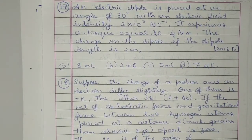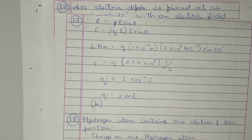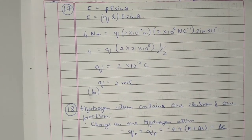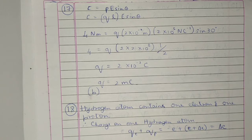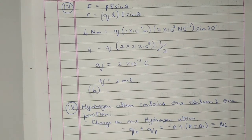Question 17: An electric dipole is placed at an angle of 30 degrees with electric field intensity 2 × 10⁵ N/C. It experiences a torque equal to 4 Nm. The charge on the dipole if the dipole length is 2 cm — torque τ = PE sin θ = Q·L·E sin θ. Substituting: 4 = Q × 2 × 10⁻² × 2 × 10⁵ × sin 30°. Solving, Q = 2 × 10⁻³ coulomb, which is 2 mC. Option B.